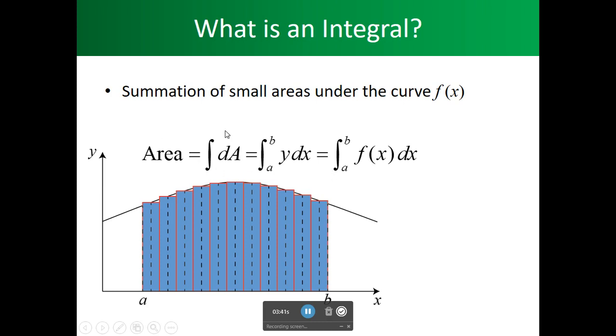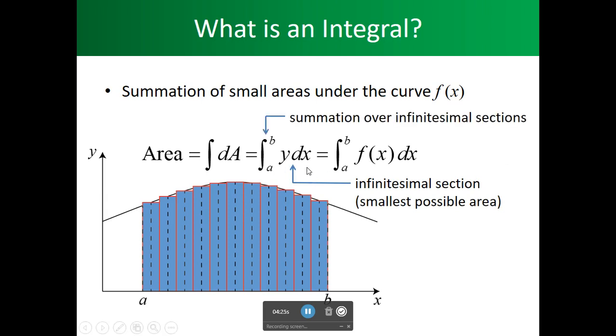The summation of small areas under a curve of f of x is equal to the area. We'll have the area, which is our dx times the y. That distance there. And we're going to keep doing that all the way to b as we keep making x smaller. As we make the change in x smaller and smaller. This becomes infinitely smaller sections, the smallest possible area. And then we have the summation over an infinitesimal section.